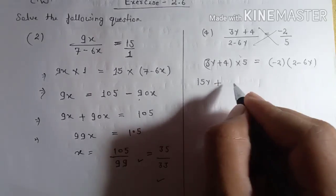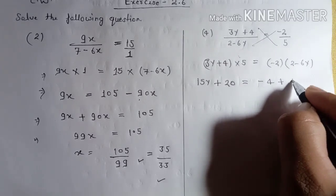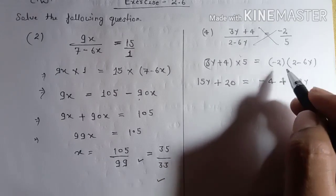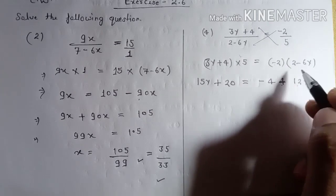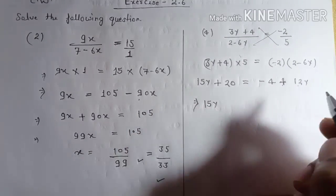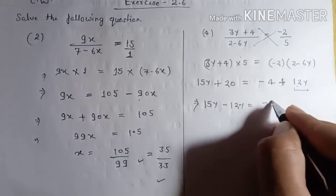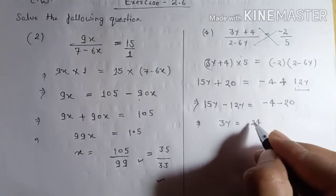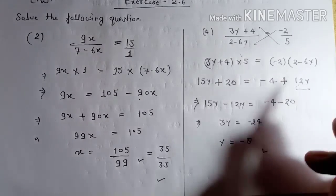That is equal to minus two into two which is minus four, and minus two into minus six y: minus and minus becomes plus, so that is plus twelve y. Now solving: fifteen y minus twelve y is equal to minus four minus twenty. That gives three y equal to minus 24, so y is minus eight. This is your answer.